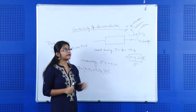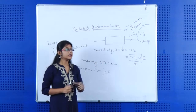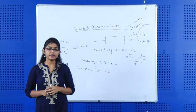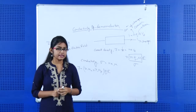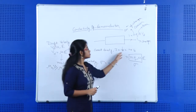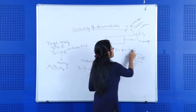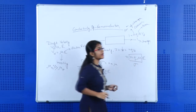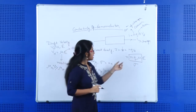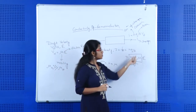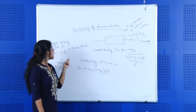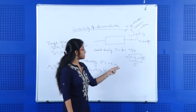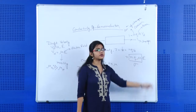The current density is defined by J, which is equal to the total current I divided by the area. So the current density is equal to N Q Vd. Since we know Vd equals mu times E, we substitute to get J = N Q mu E.